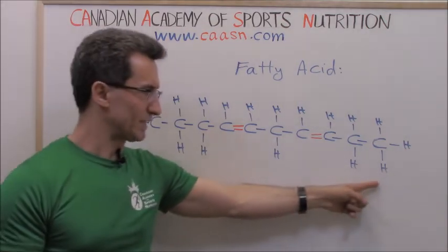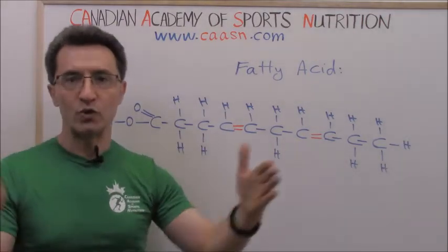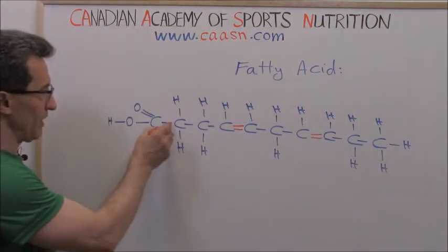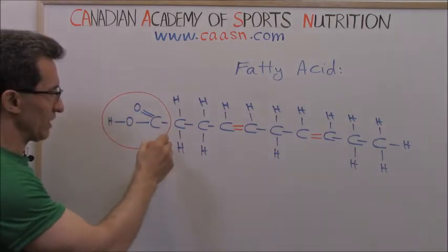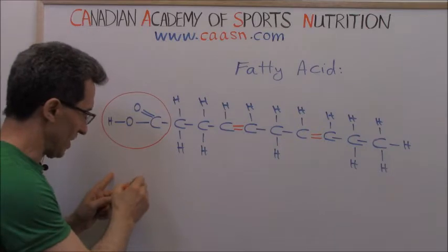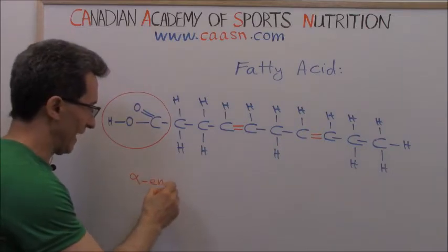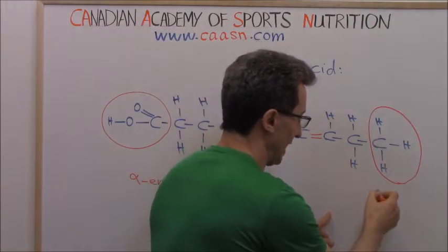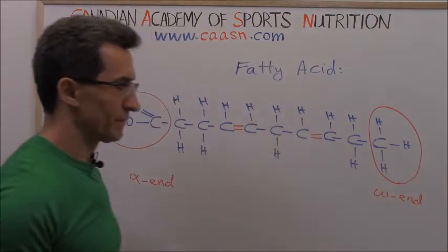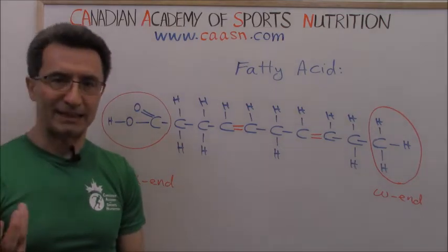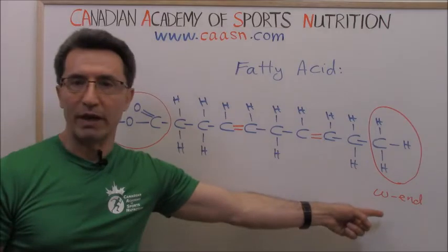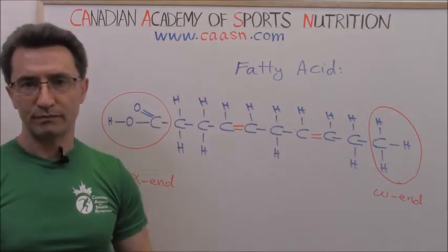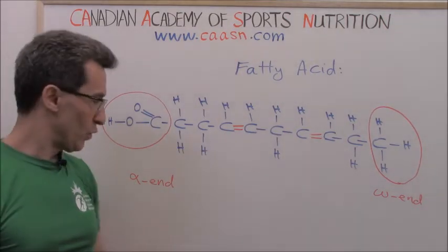Every fatty acid in its structure has two ends — one on the left side and one on the right side. On the left side we have the carboxylic acid end, and this side is called alpha. On the right side, we have what's called the methyl end, and this end is called omega. So every fatty acid has two ends: an alpha end and an omega end.